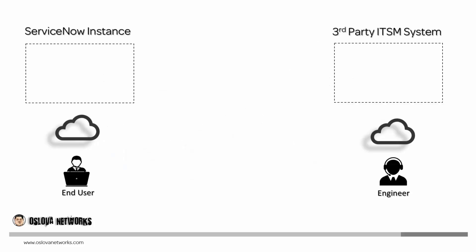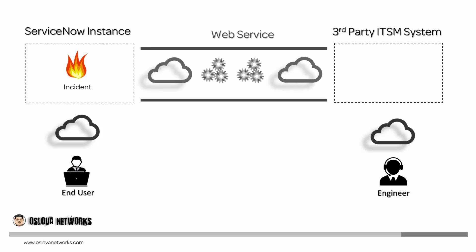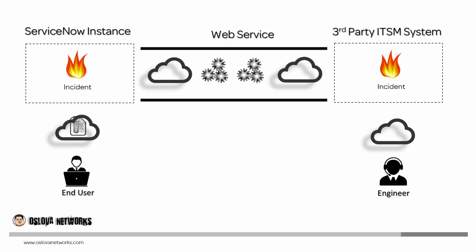The requirement is simple. We have an end user that submits a request in ServiceNow instance, in this case an incident. This incident is replicated in a third-party ITSM system — it could be another ServiceNow instance. Then this end user may want to attach files in the ticket to provide more detailed information for the engineer. We would like to send this file over to the third-party system via web service.